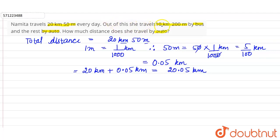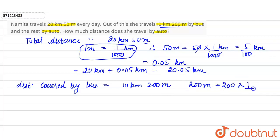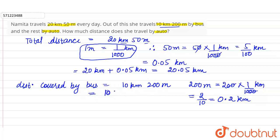Now, out of this total distance, she travels 10 kilometers 200 meters by bus. Distance covered by Namita by bus is 10 kilometers 200 meters. Again, 200 meters = 200 × (1/1000) kilometers. Two zeros cancel, giving 2/10 = 0.2 kilometers. So 10 kilometers 200 meters equals 10 + 0.2 = 10.2 kilometers.